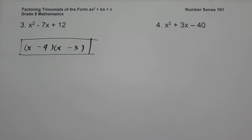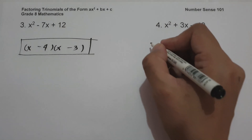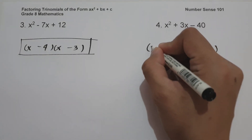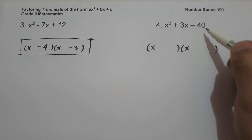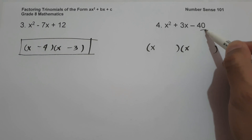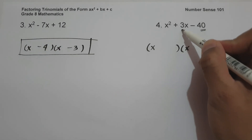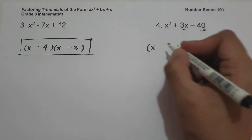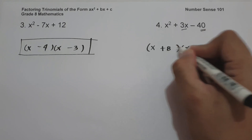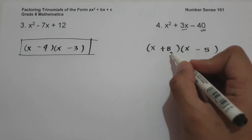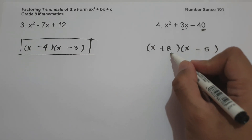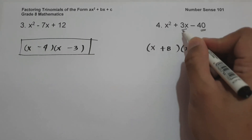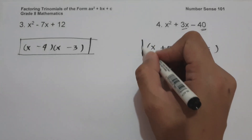On number 4, we have x squared plus 3x minus 40. The factors of x squared are x and x. What are the two numbers that if we multiply we get negative 40, and if we add we get positive 3? That is positive 8 and negative 5. Eight times negative 5 is negative 40, and 8 plus negative 5 is positive 3. This will be our answer.